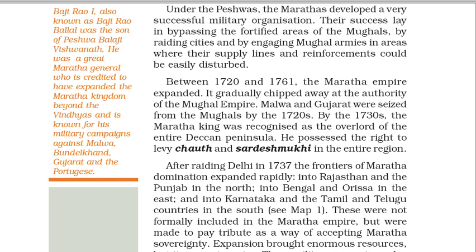Baji Rao I, also known as Baji Rao Ballal, was the son of Peshwa Balaji Vishwanath. He was a great Maratha general credited with expanding the Maratha kingdom beyond the Vindhyas, known for his military campaigns against Malwa, Bundelkhand, Gujarat and the Portuguese. Between 1720 and 1761, the Maratha empire expanded and gradually chipped away at the authority of the Mughal empire. Malwa and Gujarat were seized from the Mughals by the 1720s. By the 1730s, the Maratha king was recognized as the overlord of the entire Deccan peninsula and possessed the right to levy Chauth and Sardeshmukhi in the entire region. After raiding Delhi in 1737, the frontiers of Maratha domination expanded rapidly — into Rajasthan and the Punjab in the north, into Bengal and Orissa in the east, and into Karnataka and the Tamil and Telugu countries in the south. These were not formally included in the Maratha empire but were made to pay tribute as a way of accepting Maratha sovereignty.